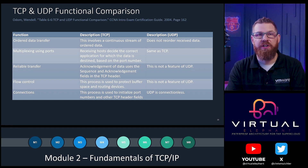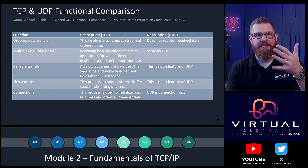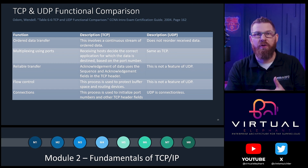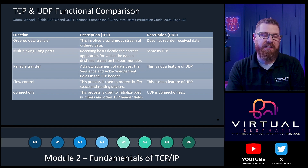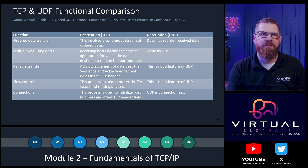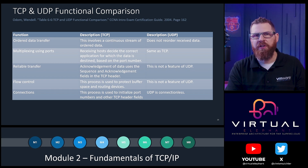Comparing TCP and UDP, the five main categories are: ordered data transfer, multiplexing using ports, reliable transfer, flow control, and connections. TCP handles all five, while UDP only handles a few. Reliable transfer and flow control are not features of UDP — this is important to keep in mind when debugging network traffic using tools like TCP dump, so you know what to look for.